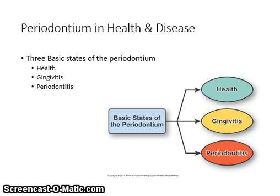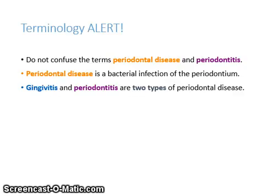Itis is a suffix meaning inflammation. For example, appendicitis is an inflammation of the appendix. See Table 3-1 on page 49 for more information. Do not confuse the terms periodontal disease and periodontitis. Periodontal disease is a bacterial infection of the periodontium, and gingivitis and periodontitis are two types of periodontal disease.